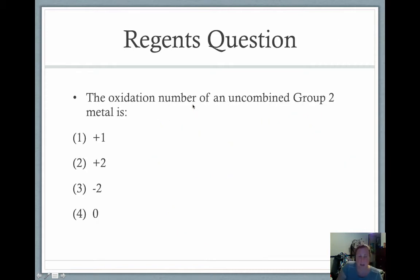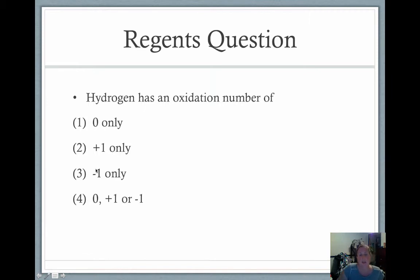Some practice questions. The oxidation number of an uncombined group two metal: since it's uncombined, it is an atom and not an ion, so its oxidation number is zero. The key word is uncombined — once it combines into a compound, the group two metal would have a plus two charge. Hydrogen's oxidation number can be zero if it's an atom, plus one normally in compounds, or minus one if it's combined with a metal — so it can be any of these three.